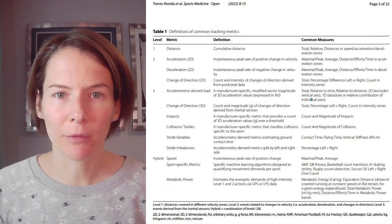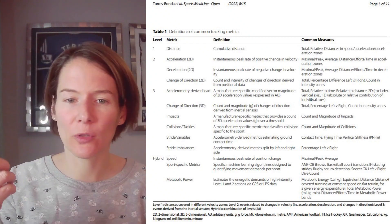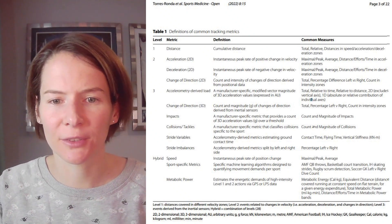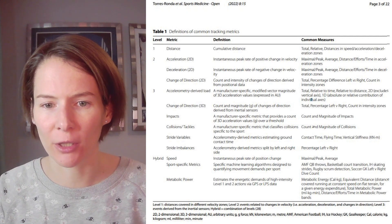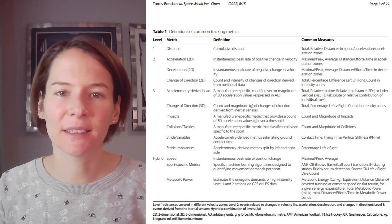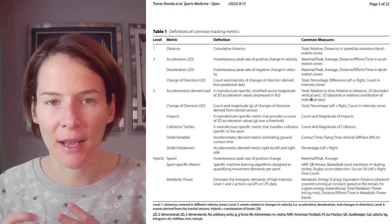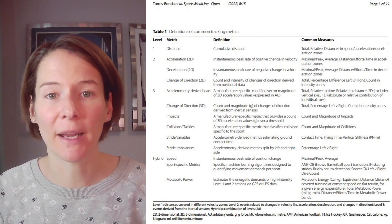A first step in simplifying the array of metrics available is to think about them in levels. We have presented them in a table using levels first proposed by Boucher and Simpson: level one being simple total distance metrics, level two being related to changes in velocity — acceleration, deceleration, change of direction — and level three focused on accelerometry-derived measures such as player load or body load, as well as impact or collision data, plus hybrid measures combining these different sources.